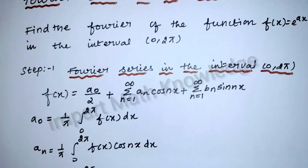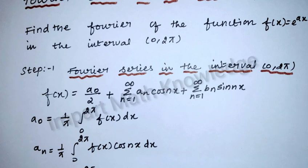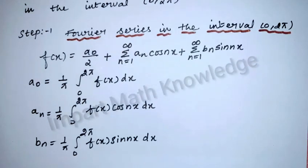For all the problems, first write the formula. The Fourier series is: a0/2 plus summation n=1 to infinity of a_n cos(nx), plus summation n=1 to infinity of b_n sin(nx). Here a0 = (1/π) integral from 0 to 2π of f(x) dx; a_n = (1/π) integral from 0 to 2π of f(x) cos(nx) dx; b_n = (1/π) integral from 0 to 2π of f(x) sin(nx) dx.